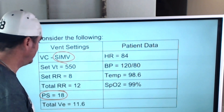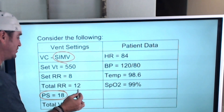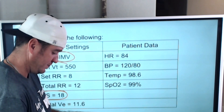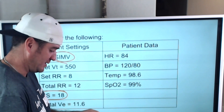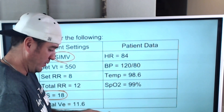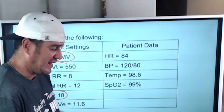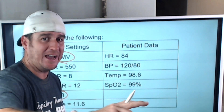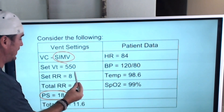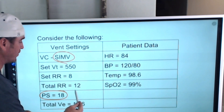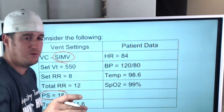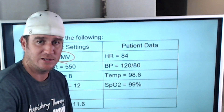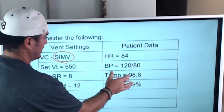If I asked you the average spontaneous tidal volume, some of you would say 11.6 divided by 12 and get approximately 966 milliliters — but that's not the answer. That would be the average tidal volume across all breaths, not the spontaneous tidal volume alone. Let me show you a table you can use in clinical practice with SIMV to assess your patient's spontaneous tidal volume.